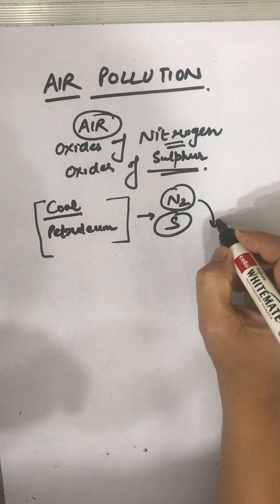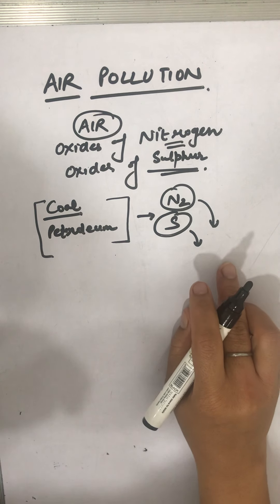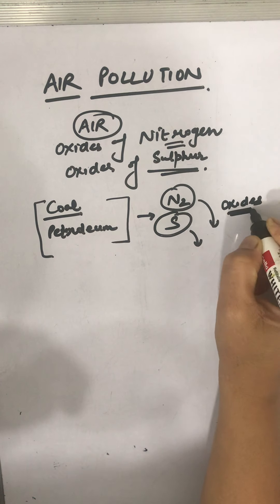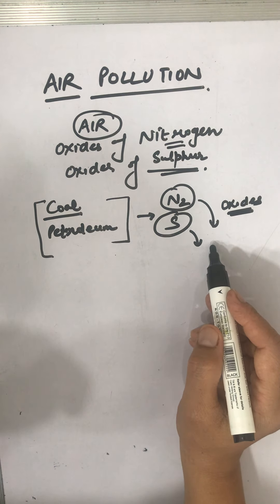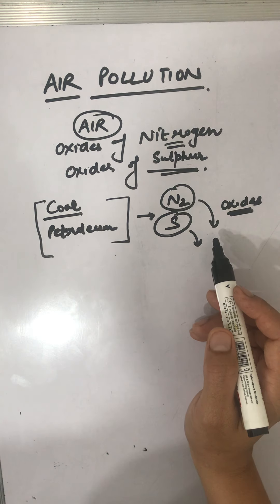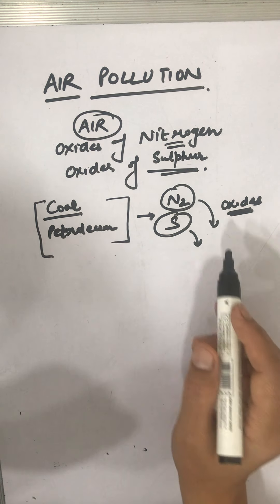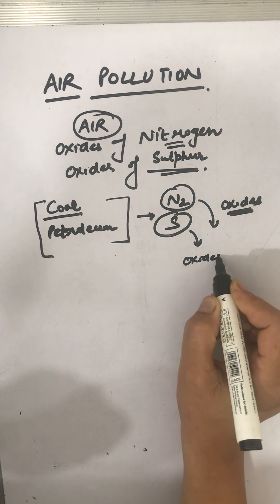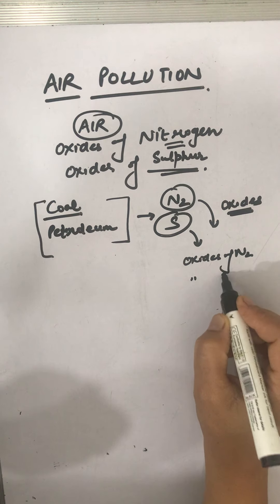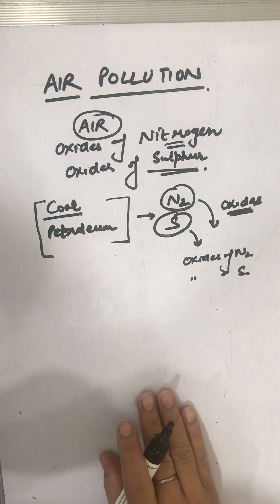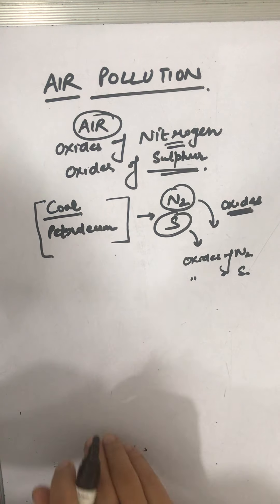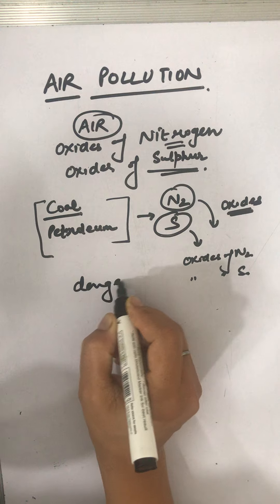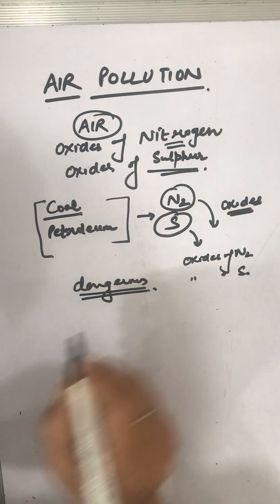Burning first is only taking place in the availability of oxygen. So whenever oxygen is provided, nitrogen and sulfur burn and form oxides of nitrogen and oxides of sulfur. Not only this, if we inhale these gases, these are dangerous.